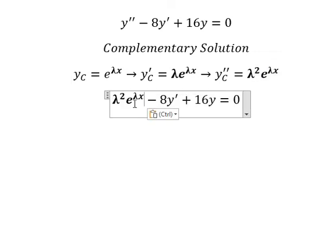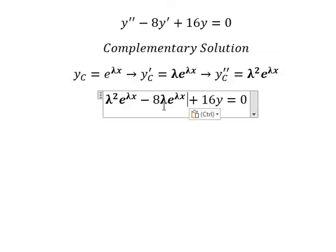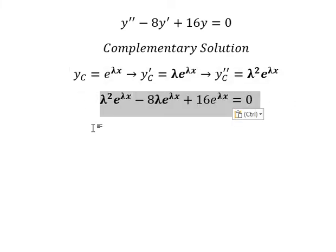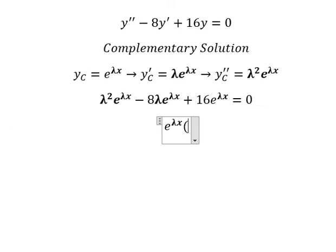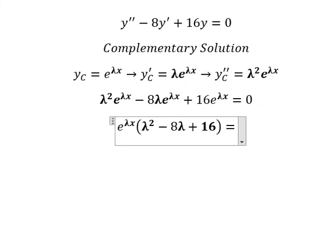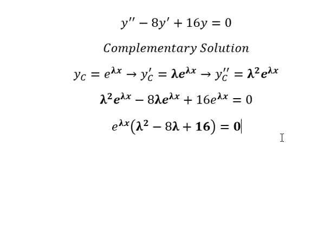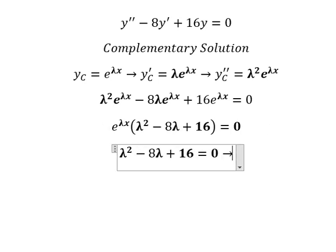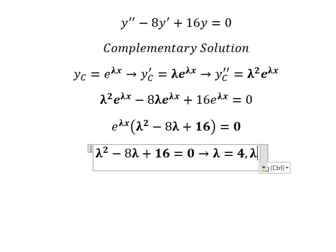We substitute these into the equation. Since e to the power of lambda x is common, we factor it out, giving us the characteristic equation: lambda squared minus 8 lambda plus 16 equals zero. Solving this, we get lambda equals 4 and lambda equals 4 — a repeated root.